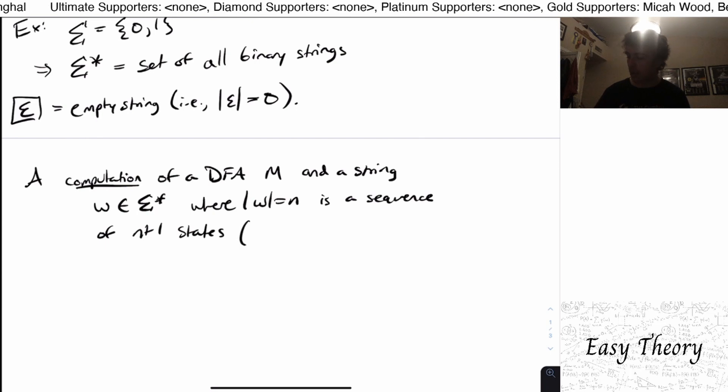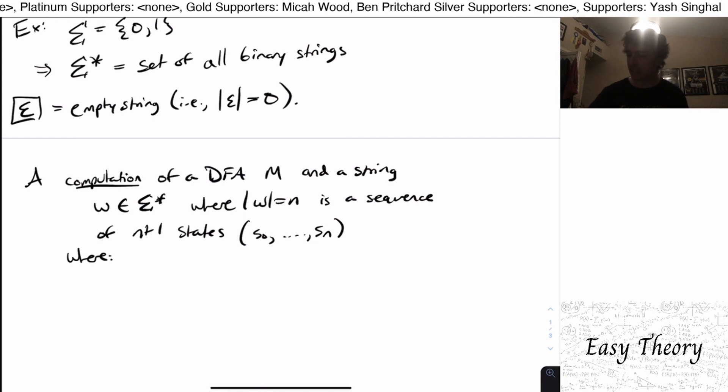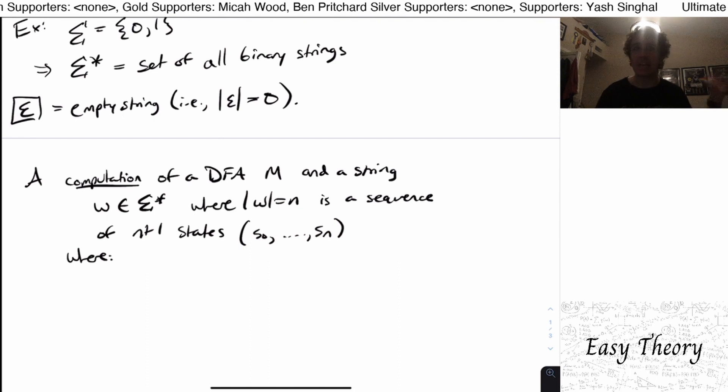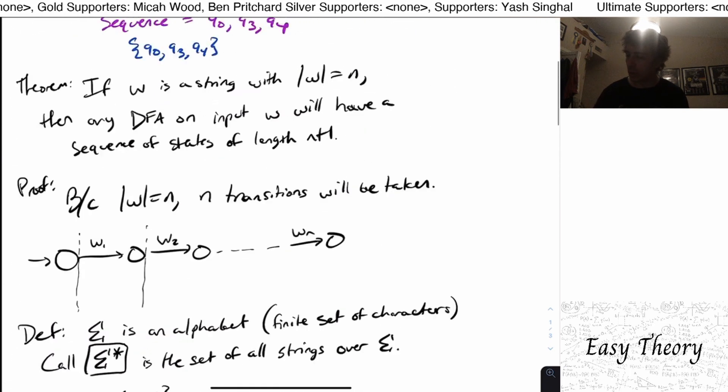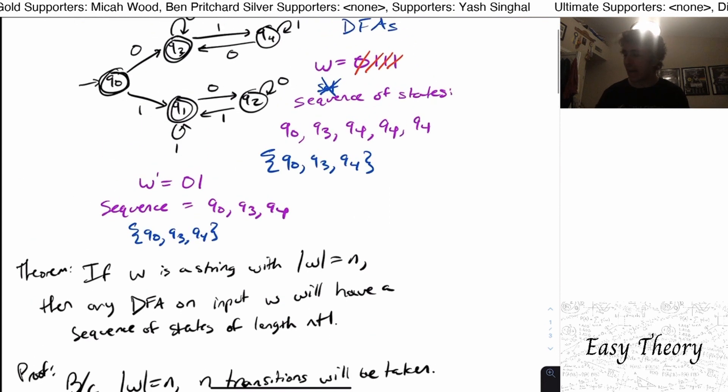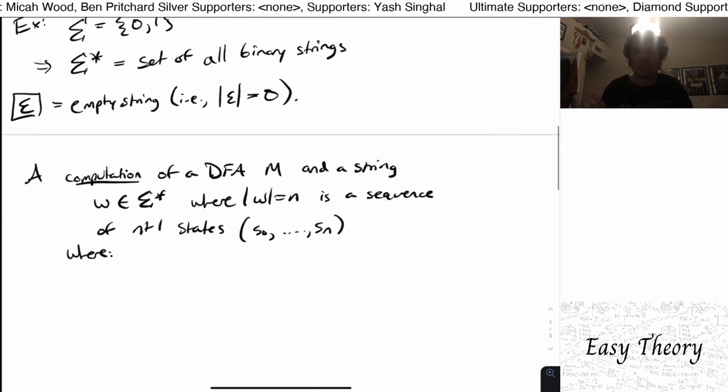And I'm going to call them s0 up to sn. So notice I started the subscript at zero and ended at n. So therefore, there are n plus one states in that list. So, and then there are some conditions about what this sequence can be, I can't just list any old states in any old order, we have to follow a certain order of what the DFA actually did on that string.